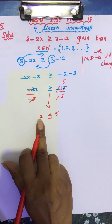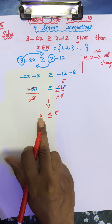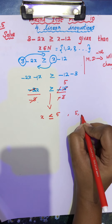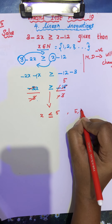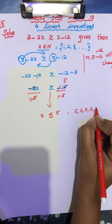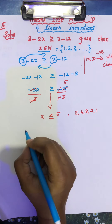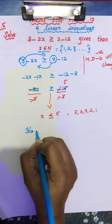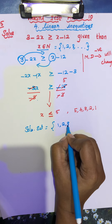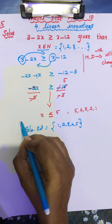So what is our answer? x is less than or equal to 5. Less than means 4, 3, 2, and 1. You have to stop here. So what is our answer? The solution set is 1, 2, 3, 4, and 5. This is your solution set.